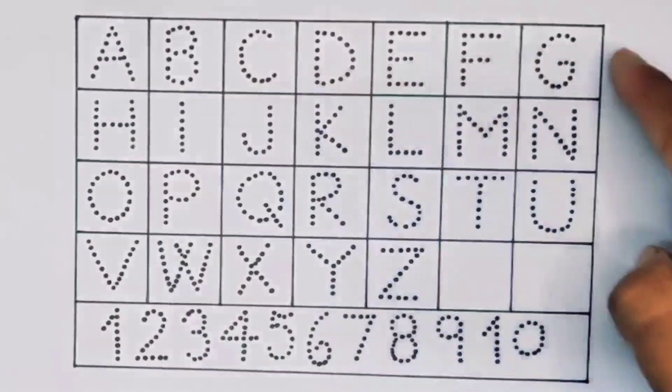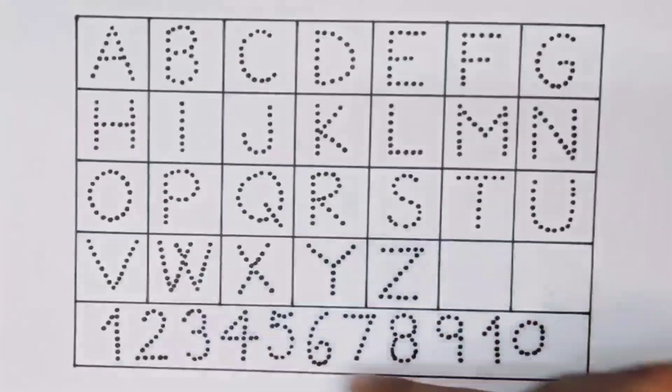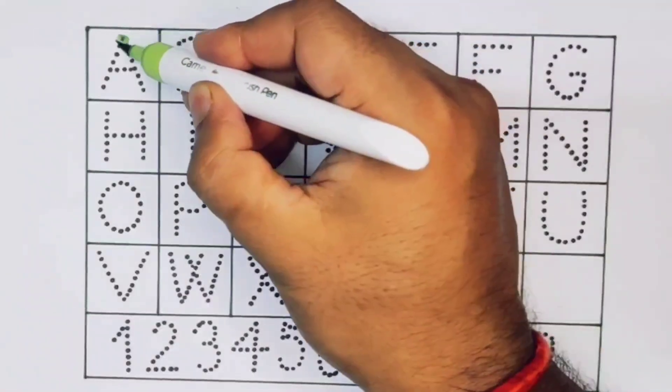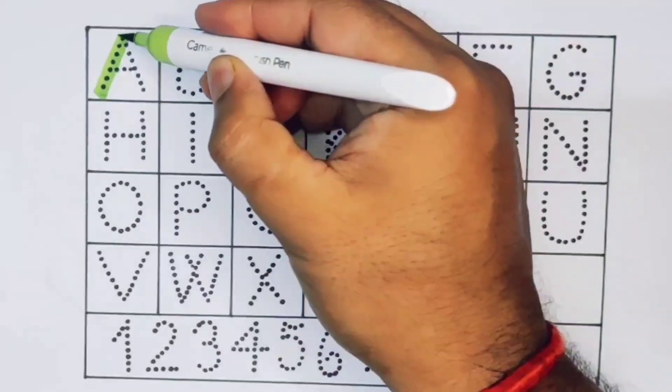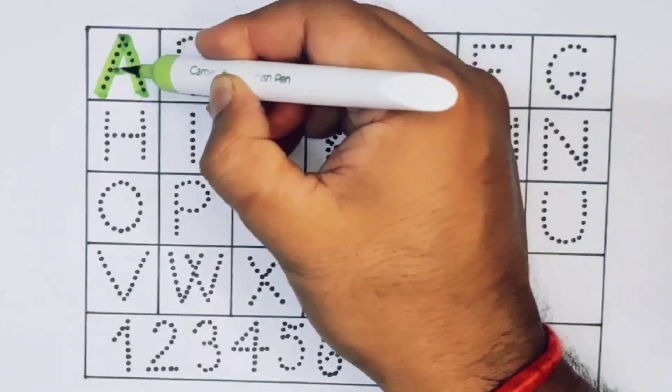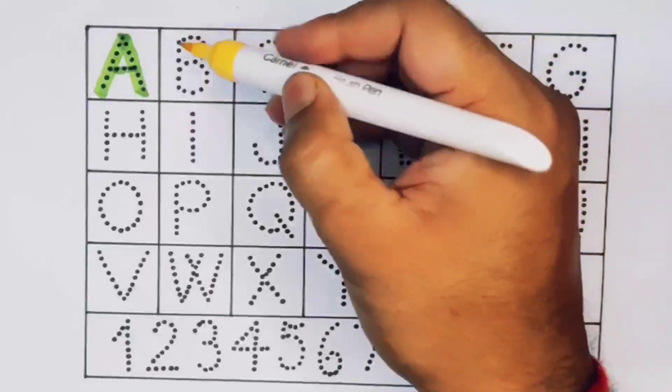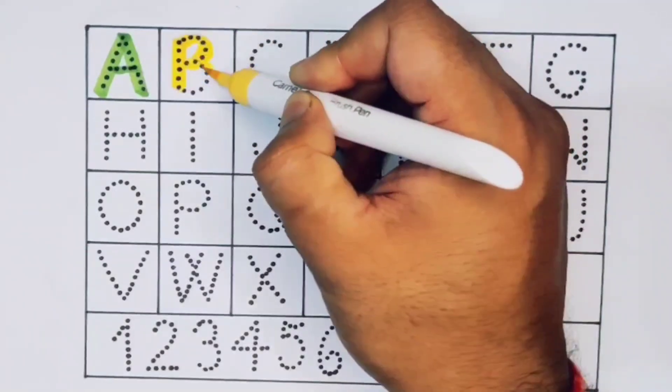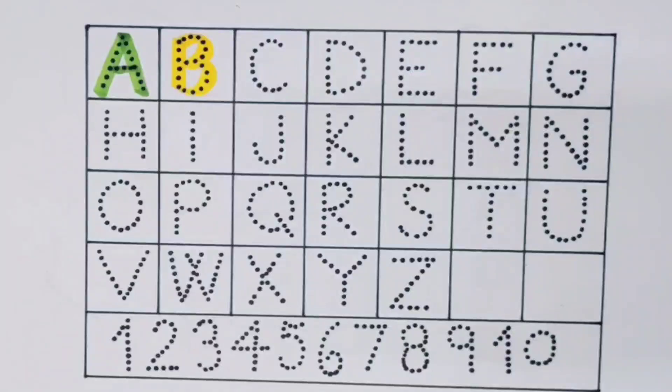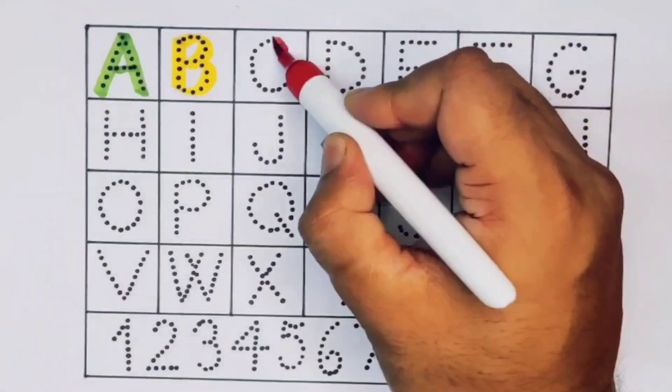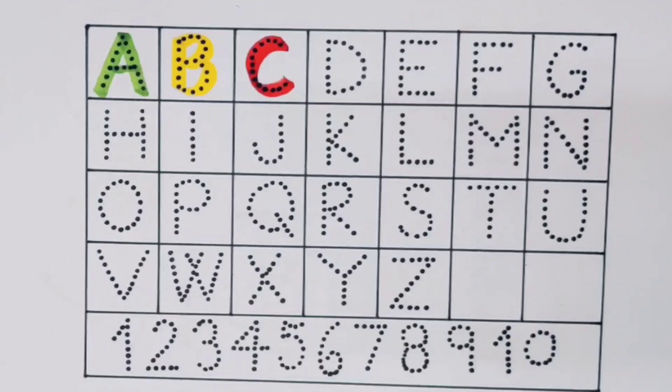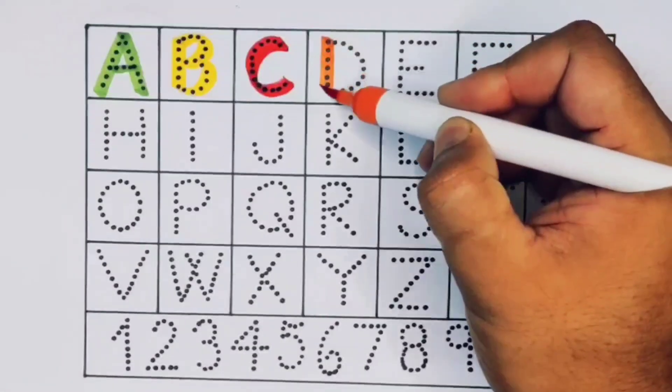Now let's learn the alphabet A to Z and numbers counting one to ten. First, A, A for Alligator. Next, B, B for Ball. Next kids, C, C for Caterpillar. Next, D, D for Doctor.